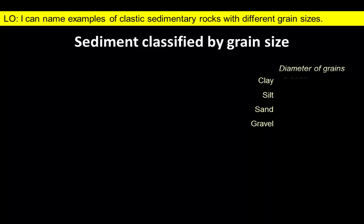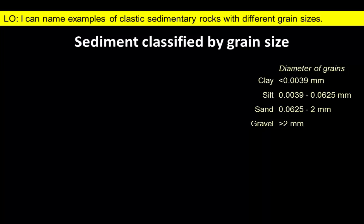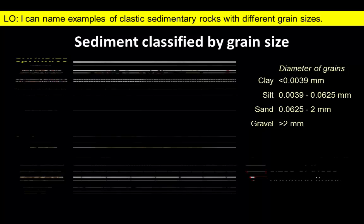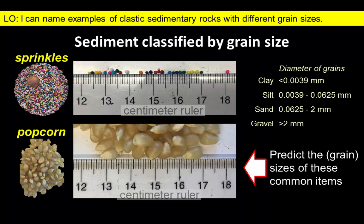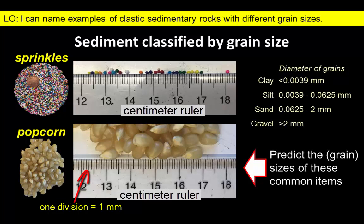Clastic sediments and sedimentary rocks are primarily classified on the basis of their grain size, specifically the diameter of the grains. However, the range of sizes isn't that intuitive, so let's look at a few familiar items to get a better idea about what these terms really mean.